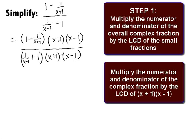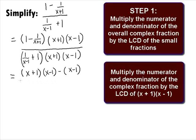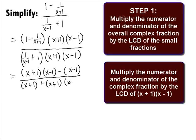Distributing the x plus 1 times x minus 1 in the numerator, we get x plus 1 times x minus 1 minus x minus 1. When we distribute this in the denominator, we get x plus 1 plus x plus 1 times x minus 1.